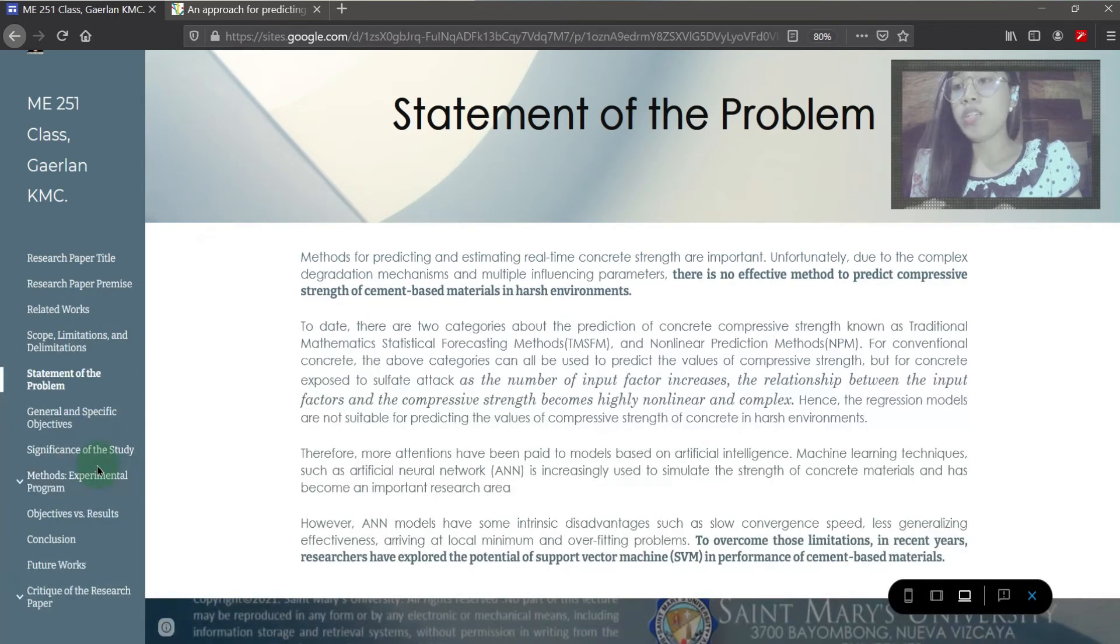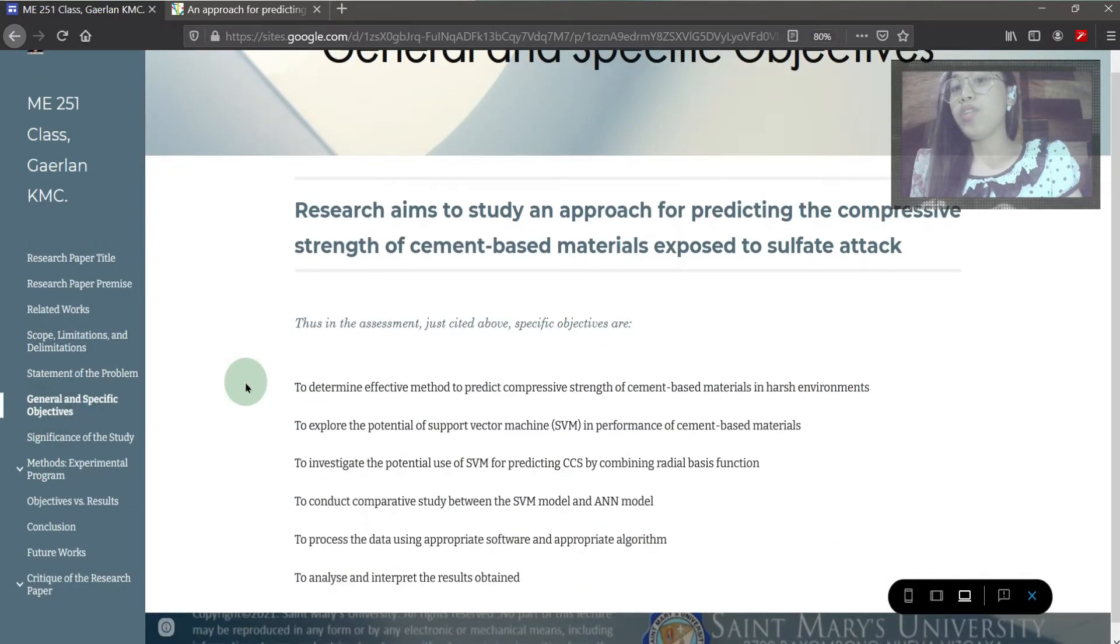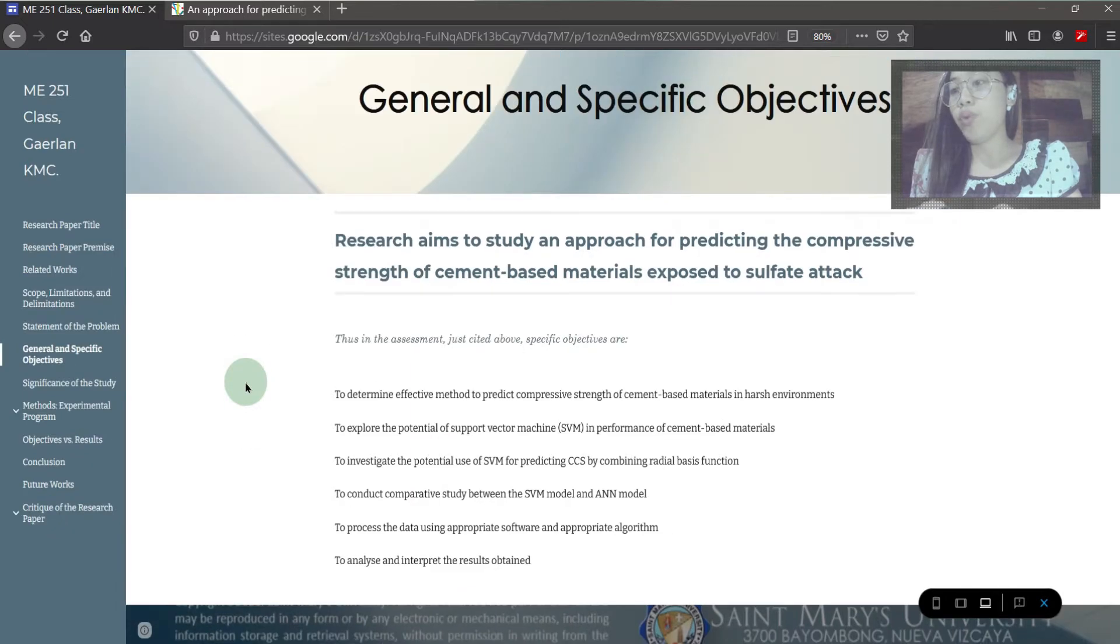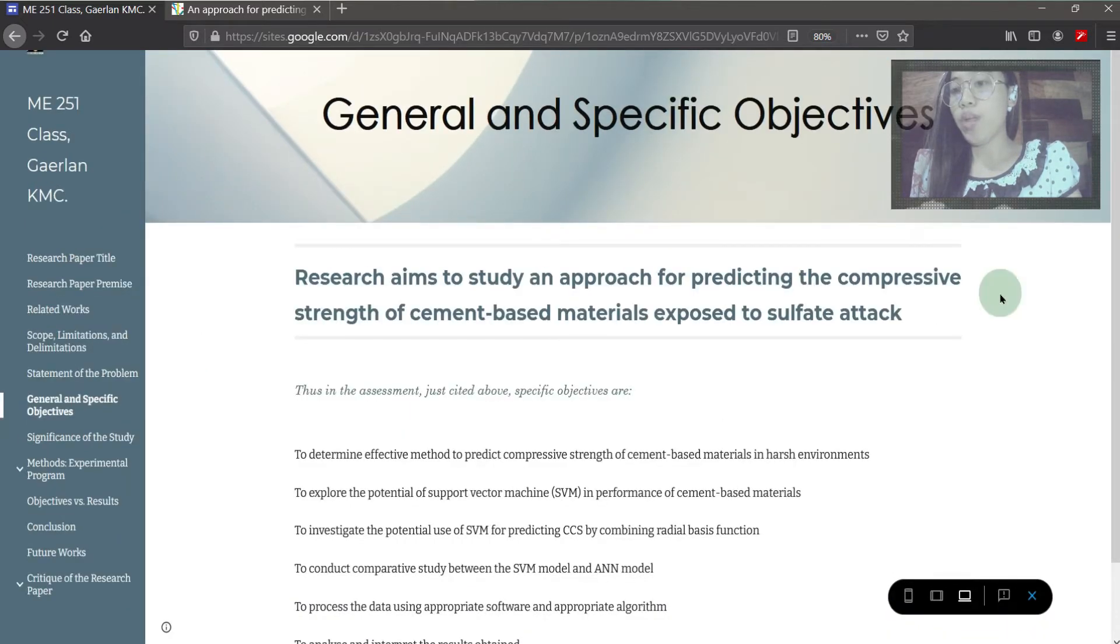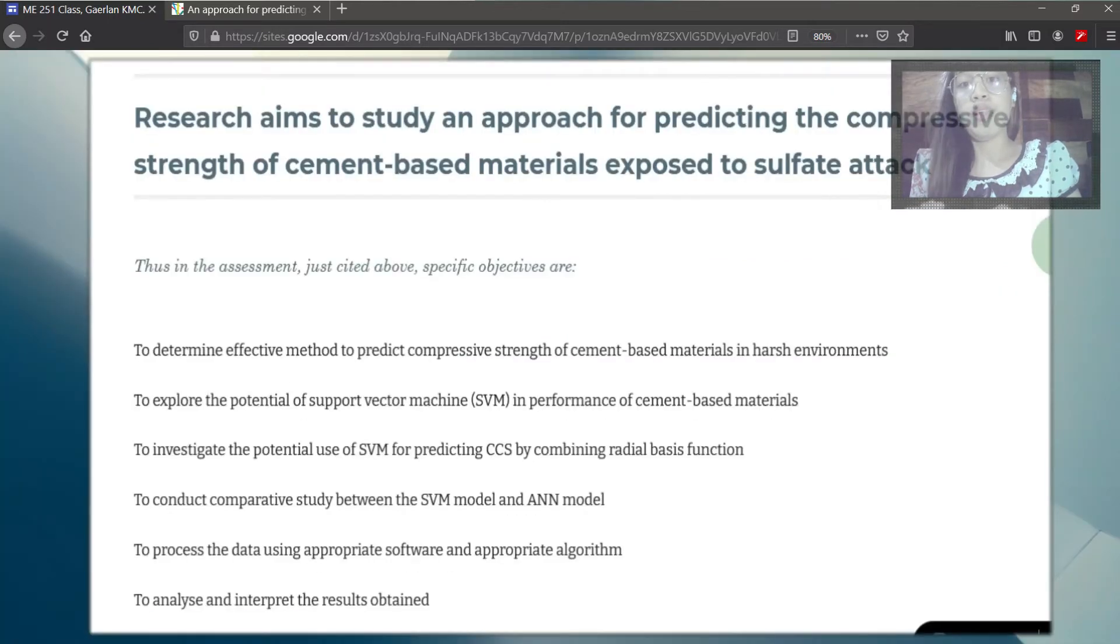That is why more attentions have been paid based on artificial intelligence and machine learning techniques. The artificial neural network was one of the options, but due to its intrinsic disadvantages, researchers overcome these limitations to explore the potential of the support vector machine. General objective of the research is to study an approach for predicting the compressive strength of cement-based materials exposed to sulfate effect.